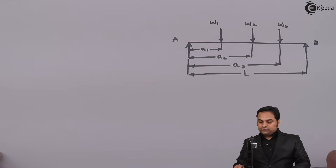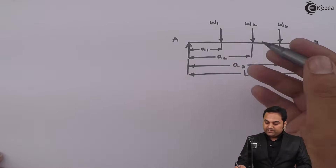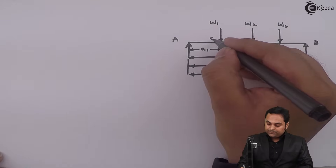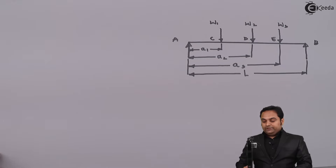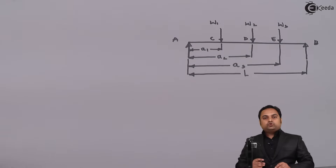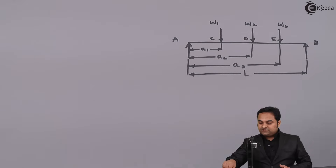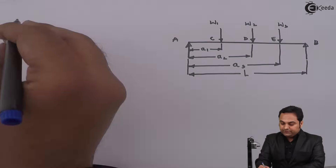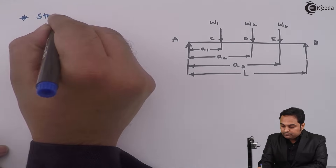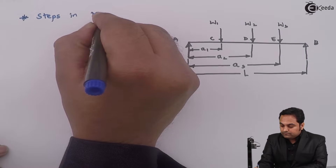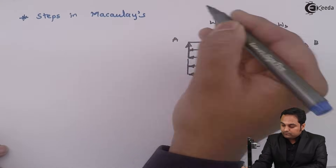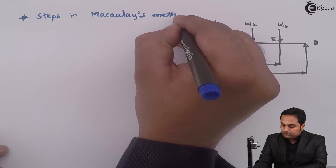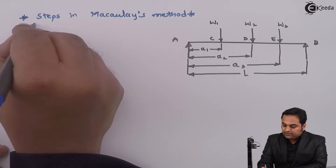The distances of the loads are: w1 is located at distance a1 from the left hand support and w3 is located at distance a3 from the left hand support. For such a beam we need to find out the slope and deflection at various points by using Macaulay's method, so I am going to write the steps.